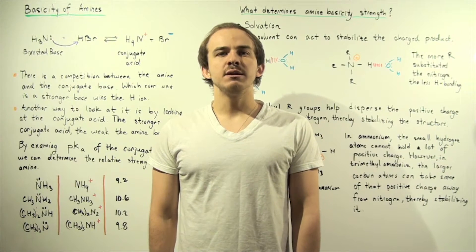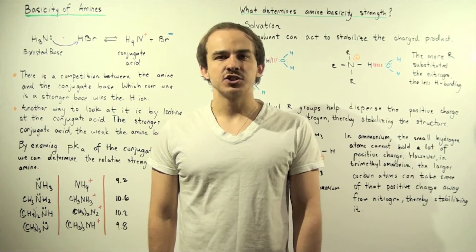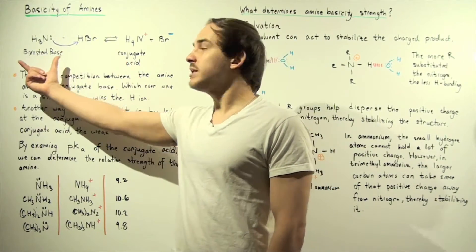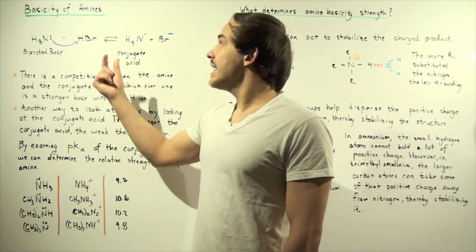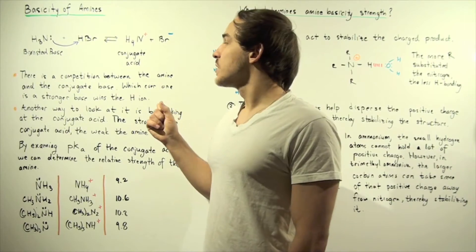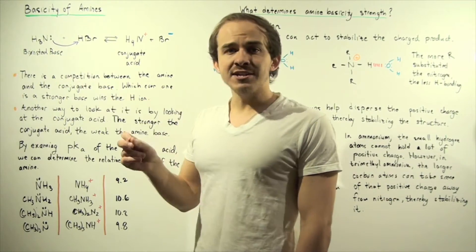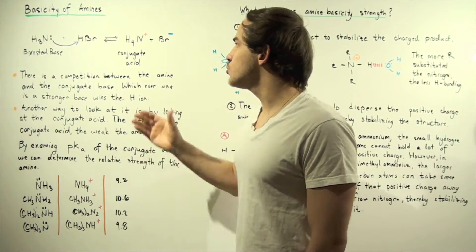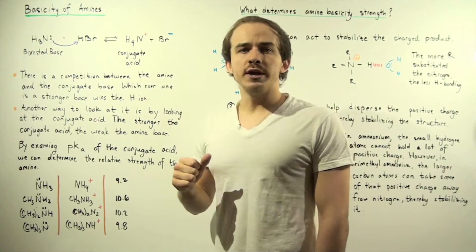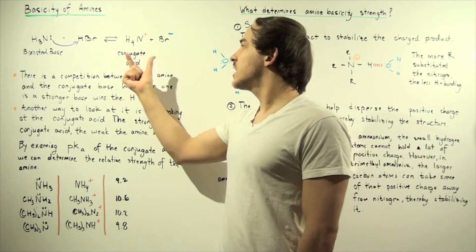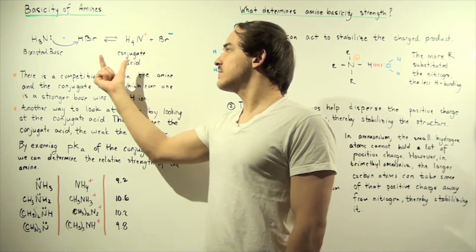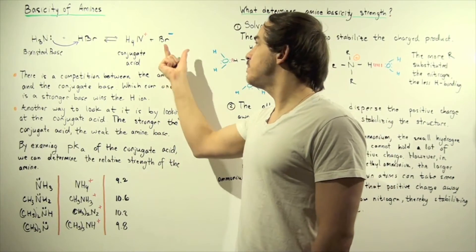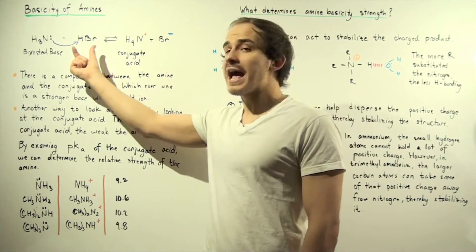Let's begin by looking at the following reaction, in which we have two reactants: our amine as the base and our acid. There is a transfer of an H atom between these two reactants, and we produce two products: the conjugate acid of our base, ammonium, and the conjugate base of our acid.